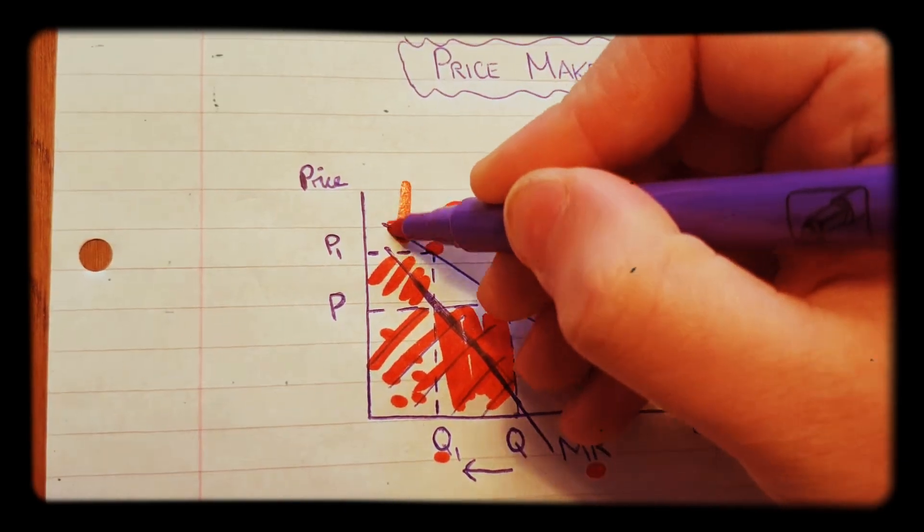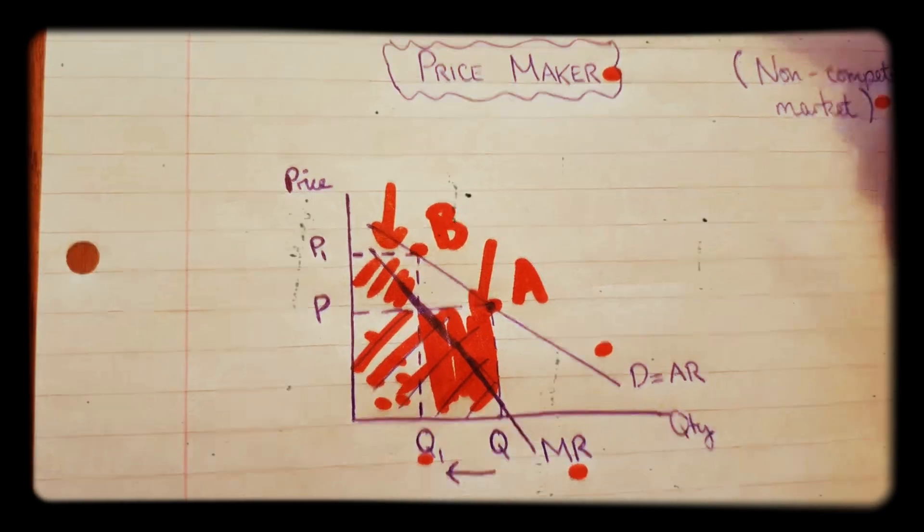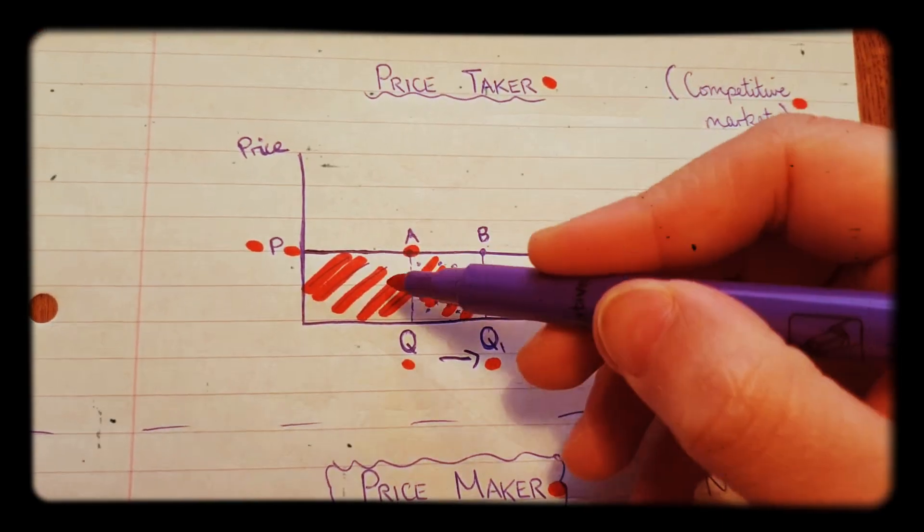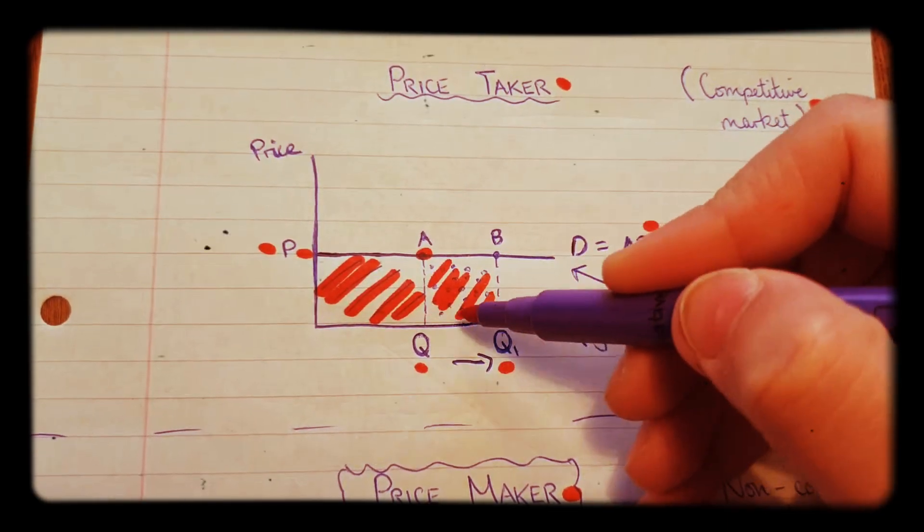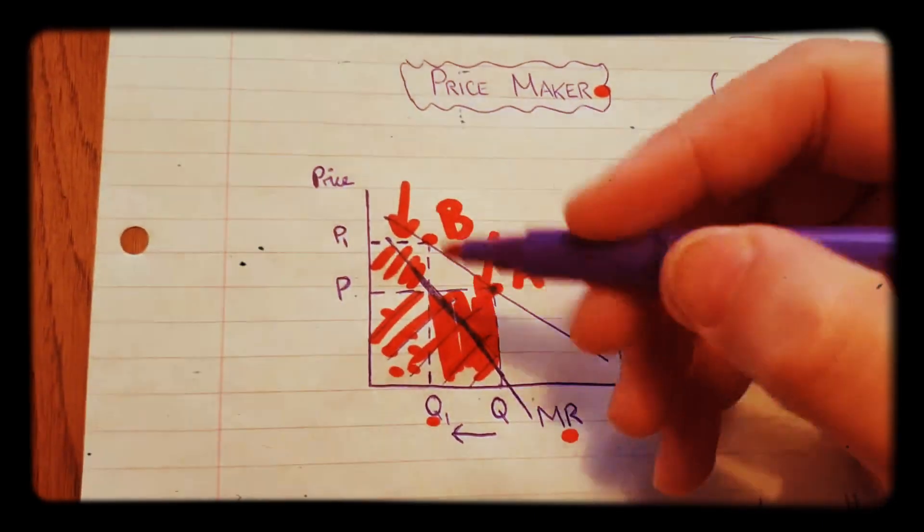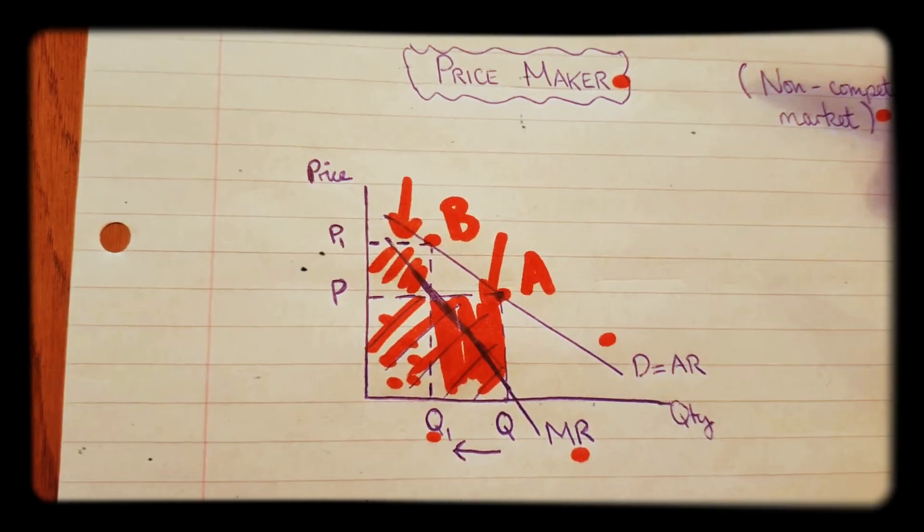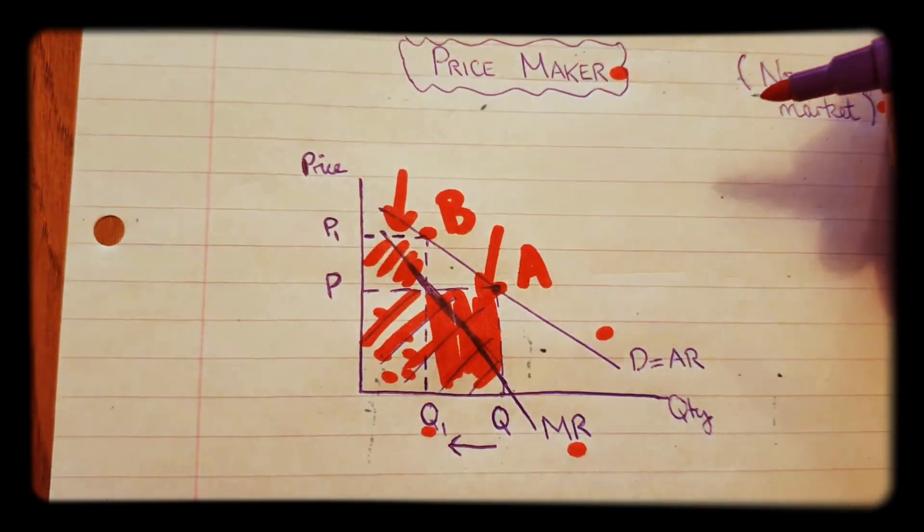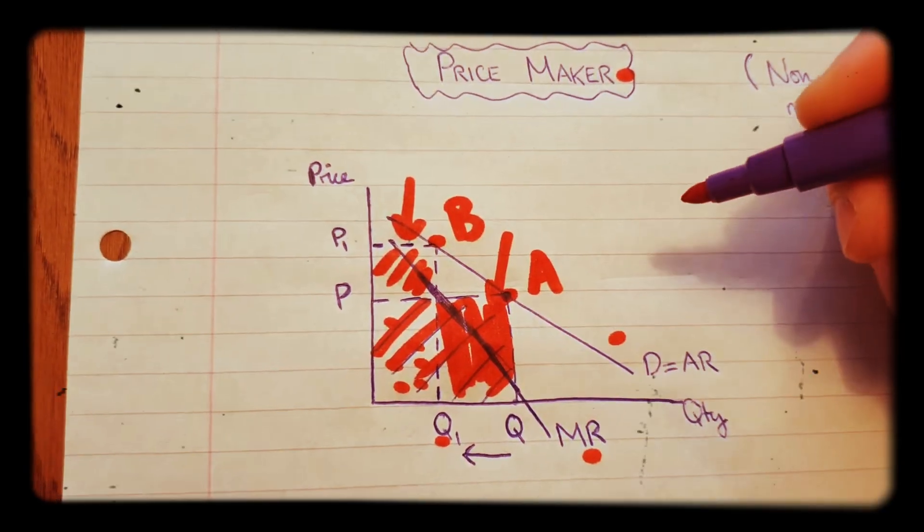So it's slightly different to this one here when the quantity changed before. It was very simple to see what the firm gained. Now the firm loses some here but it gains some up there, and that's why the marginal revenue is different to the AR curve.